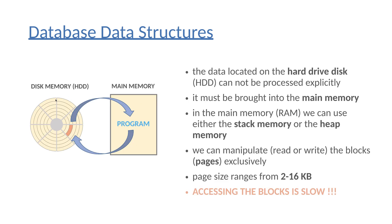What's extremely crucial is that external memory — the hard drive disk — and main memory — the internal memory — are not independent of each other. Data located on the hard drive disk cannot be processed explicitly. Because the database is on external memory, we are not able to process the data directly; it must be brought into the main memory. This procedure is called paging, when the operating system fetches a given data chunk from external memory and brings it to internal memory.